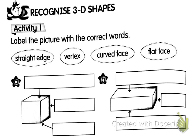Label the picture with the correct word. Straight edge means like this. Straight edge. Vertex means like this. This one is vertex. Curve face. Flat face is like this, just flat.